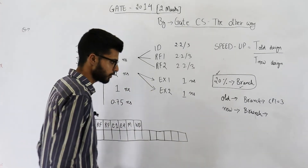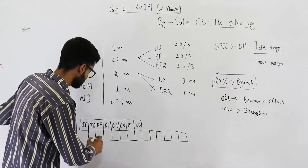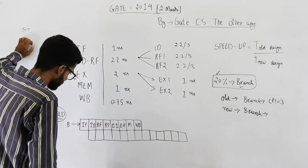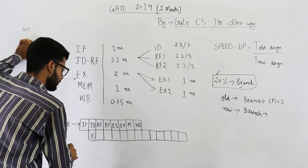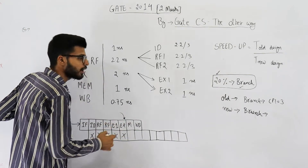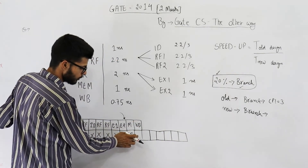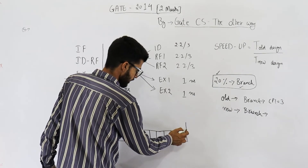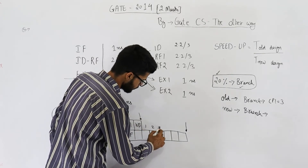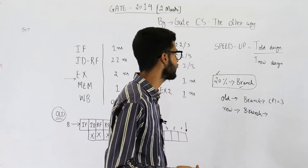In the new design, because we have eight stages, the first instruction takes these eight clock cycles. We cannot start fetching the next instruction right away because this is a branch instruction. The IF will not happen until after EX2 completes — those are stall cycles. Only after completion of EX2 do we get the target address. Counting the clocks between completion of two instructions: 1, 2, 3, 4, 5, 6 — we have six clock cycles. So the average CPI for branch in the new design is six.